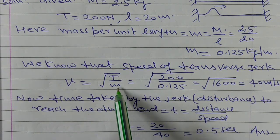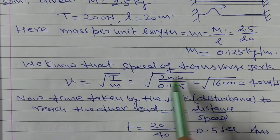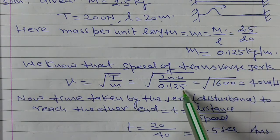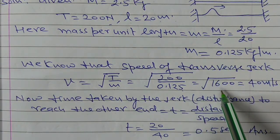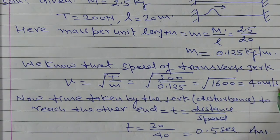This tension and this is the mass per unit length of the string. And this, on putting the values, T is equal to 200 N and the mass per unit length, small m is equal to 0.125. On solving, this is square root of 1600 and this is equal to 40 m per second.